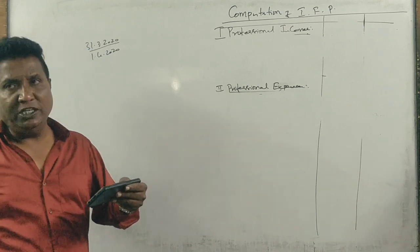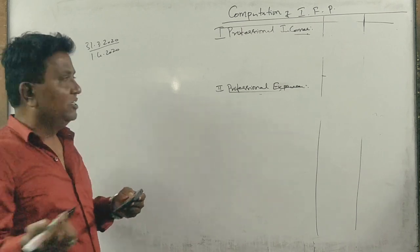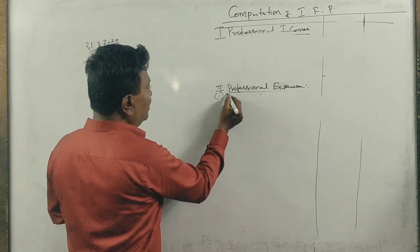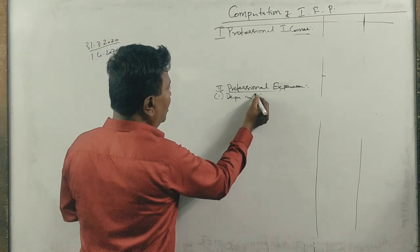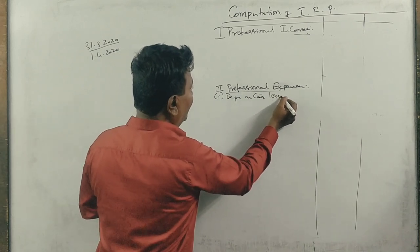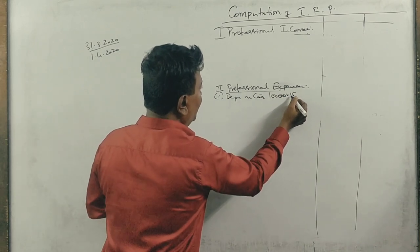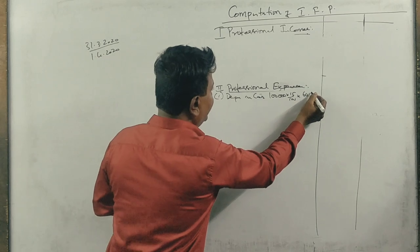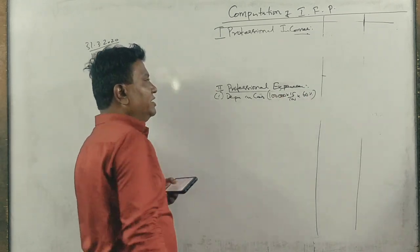60% of the company's. So depreciation on car: one lakh into 15% into 60%.